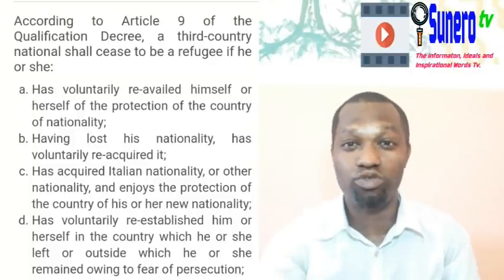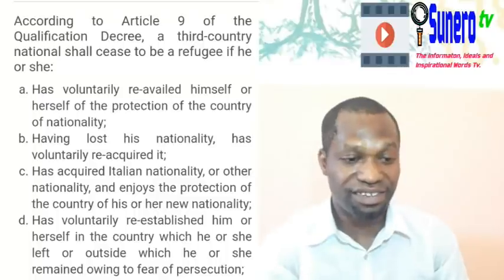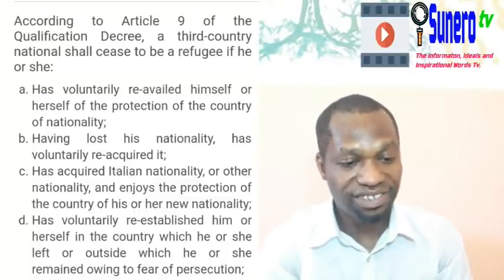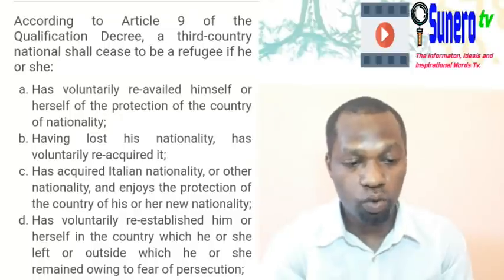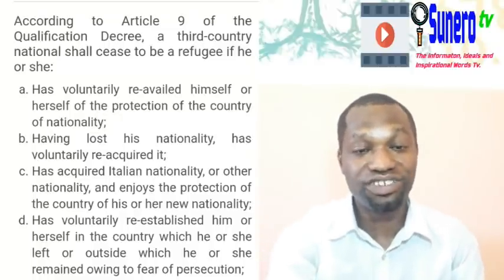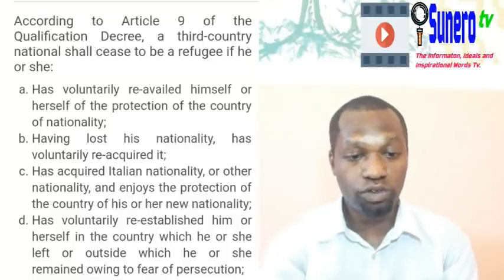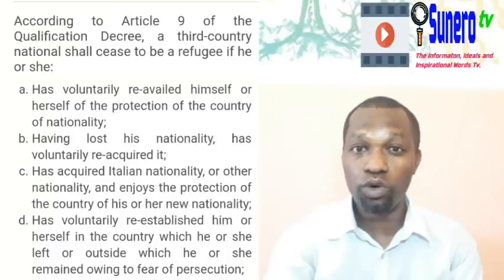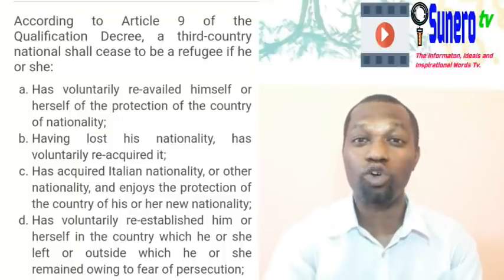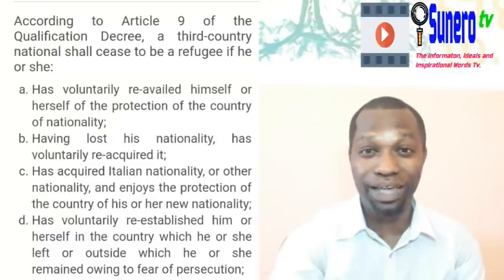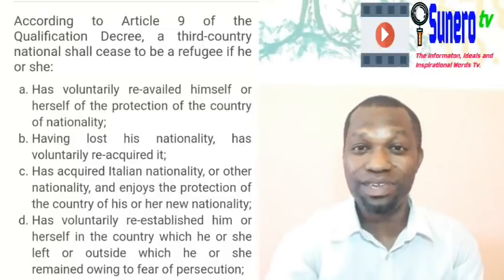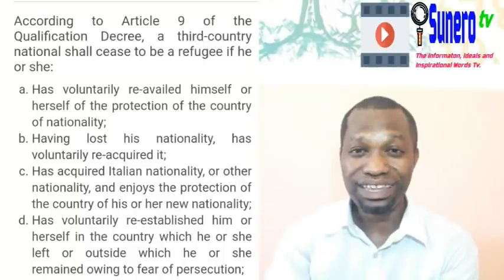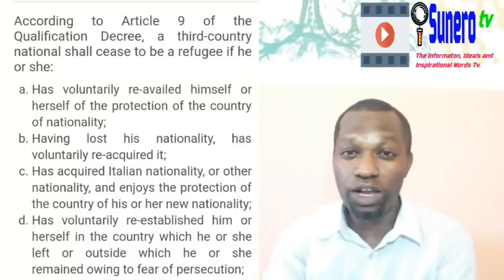If you have voluntarily re-established yourself in the country you left due to fear of persecution, the refugee status will also cease. The only option is to make sure you don't do anything that triggers cessation, because your document is still very much under review. Even those having a two-year humanitarian document — it is a temporary document. Whoever has it, it's temporary; they just gave it to you for a little while and can recall it.